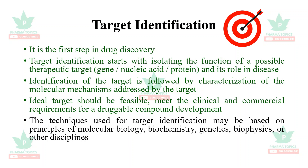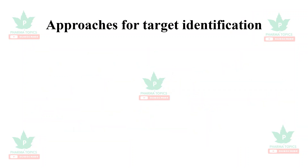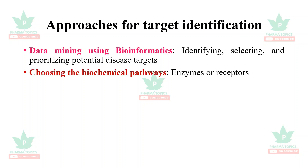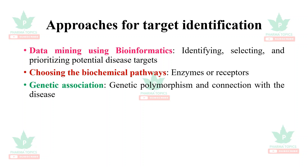The techniques used for target identification may be based on principles of molecular biology, biochemistry, genetics, biophysics, or other disciplines. The approaches include data mining using bioinformatics — identifying, selecting, and prioritizing potential disease targets — choosing the biochemical pathways such as enzymes or receptors, and genetic association: identification of a genetic polymorphism and its connection with the disease.